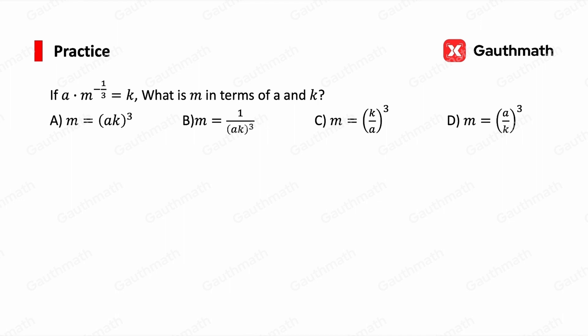Now we have to isolate m. The first step, we have to divide a on both sides. For the left-hand side, the a cancels. So m^(-1/3) = k/a.